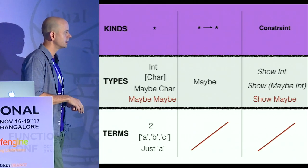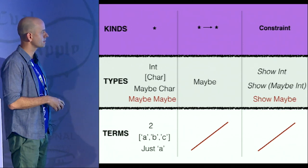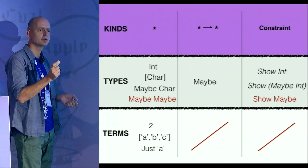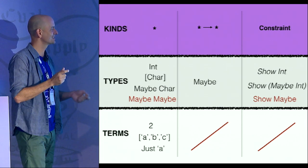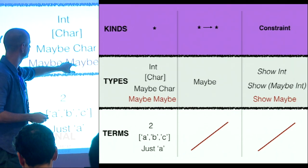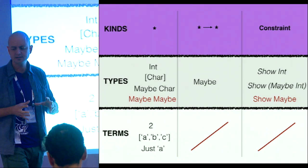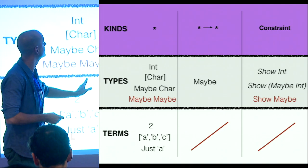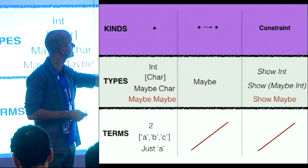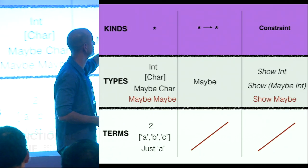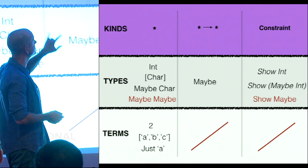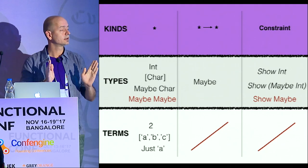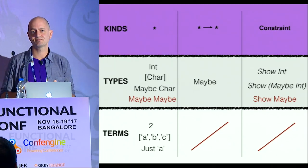I can't say Maybe Maybe, because Maybe takes one type — its kind is a higher-order kind. So while the kind system is very blunt, it just has these arity specifications. A type that takes one type, a type that takes multiple types, and constraints. These are the only three kinds that the Haskell type system can mainly distinguish.